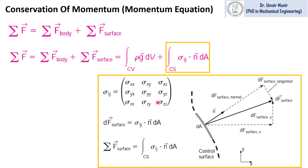So we have three normal stresses and six shear stresses in a stress tensor. To find the differential force acting on this surface in the normal direction, we will multiply this stress tensor with area and take the dot product with the n vector, which is normal to this surface. We will get the surface force on the complete surface at the inlet or outlet by integrating it with respect to area.